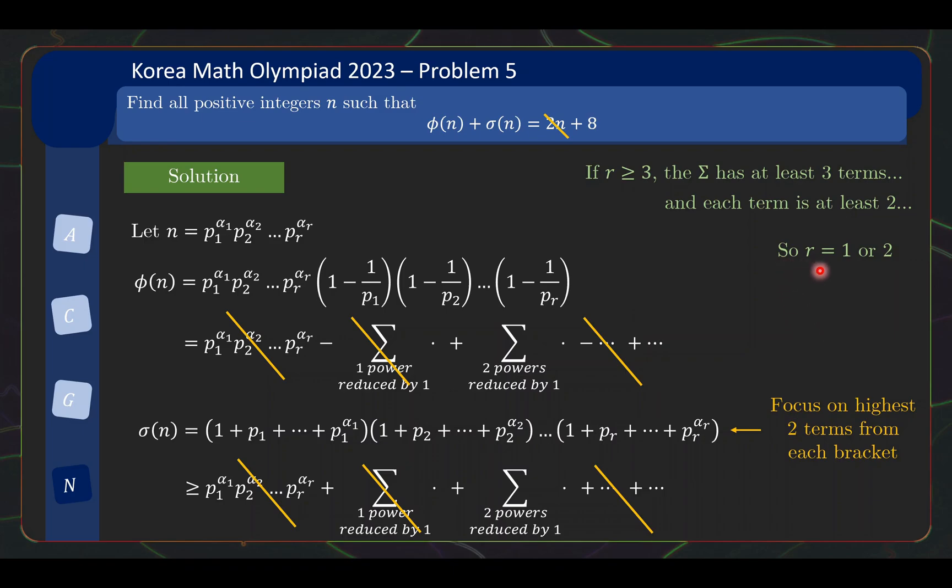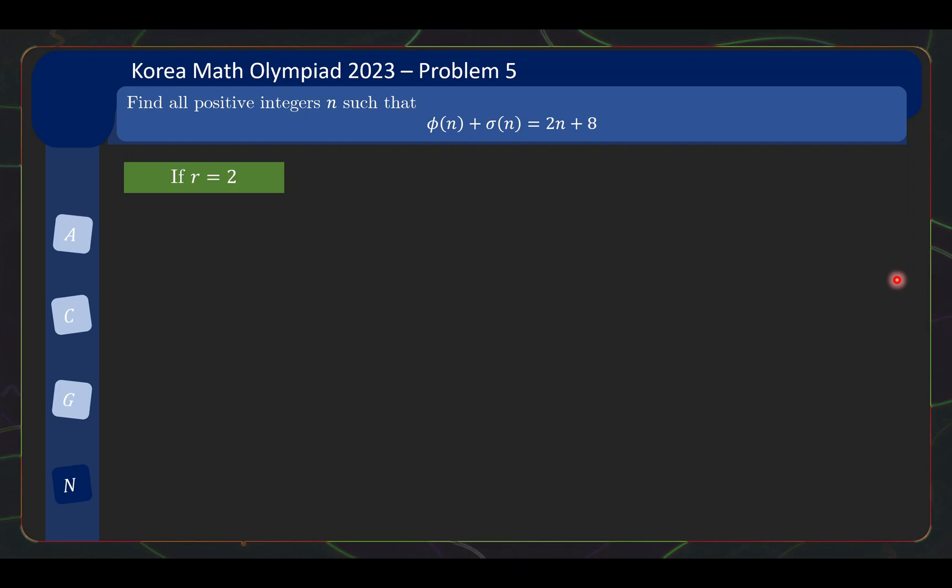So now we have greatly reduced the problem, but we are not fully there yet, let us now consider the harder case if r equals 2, what happens? So I can write n in the simpler form now, p^a times q^b, and as before this is the formula for φ(n), and if I expand out, you will see here, this is the original n, then minus the sum of terms where my power is reduced by 1 in one of the terms, and then plus this term where I reduce both powers by 1.